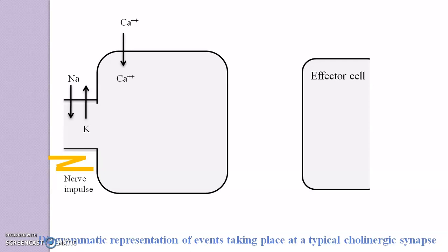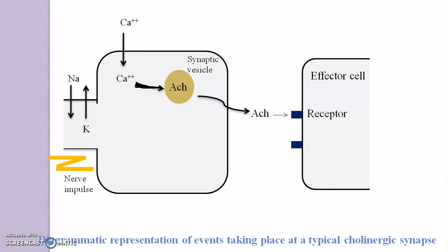Calcium ions play a major role in the release process of acetylcholine. When there is an entry of calcium inside the neuron, there is a release of acetylcholine from the synaptic vesicles into the synaptic cleft. Once the acetylcholine enters the synaptic cleft, it gets attached to the receptor and is also rapidly hydrolyzed by the enzyme acetylcholinesterase. Due to acetylcholinesterase, acetylcholine gets hydrolyzed into choline and acetate.